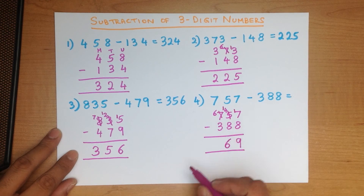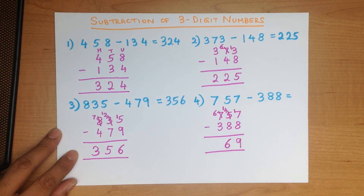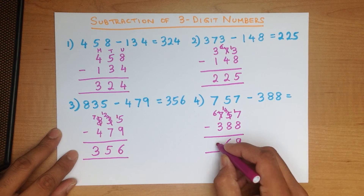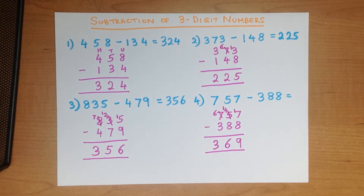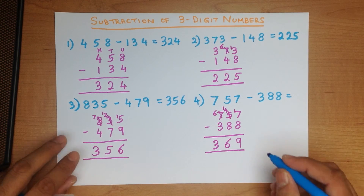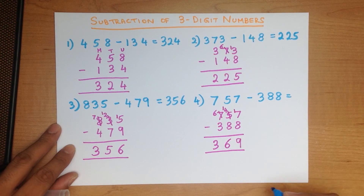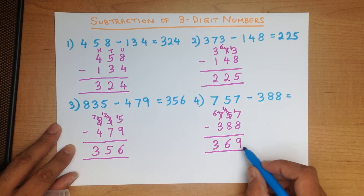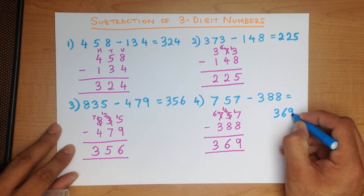Lastly, we do the hundreds column. What is 6 minus 3? The answer is 3, and we have our answer: 757 minus 388 is 369.